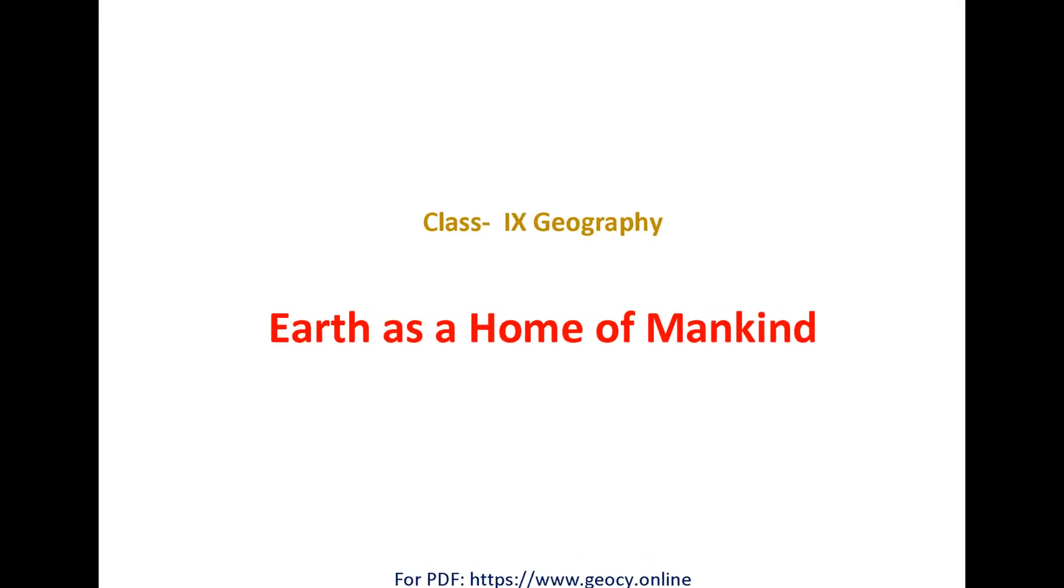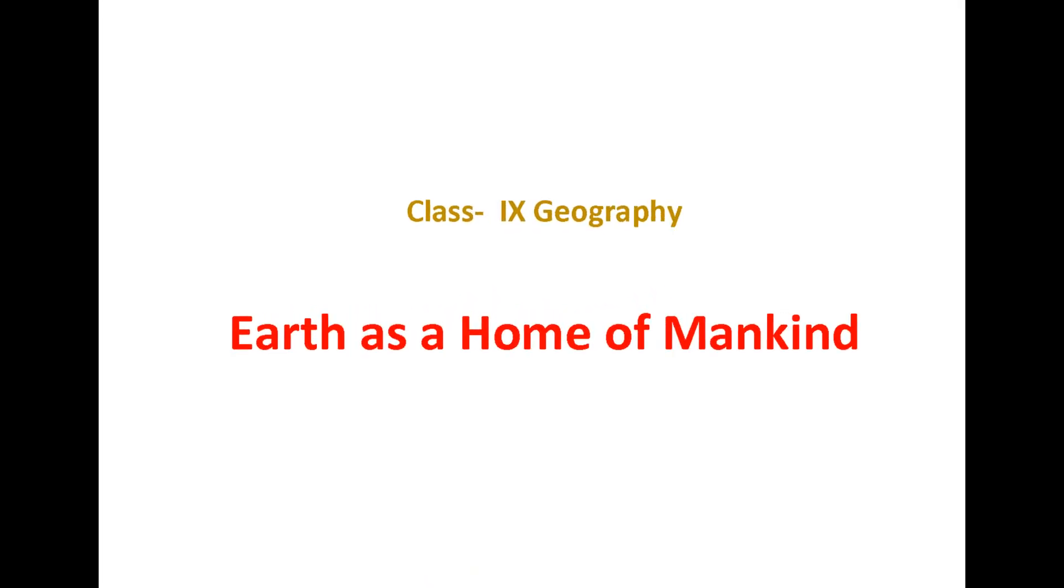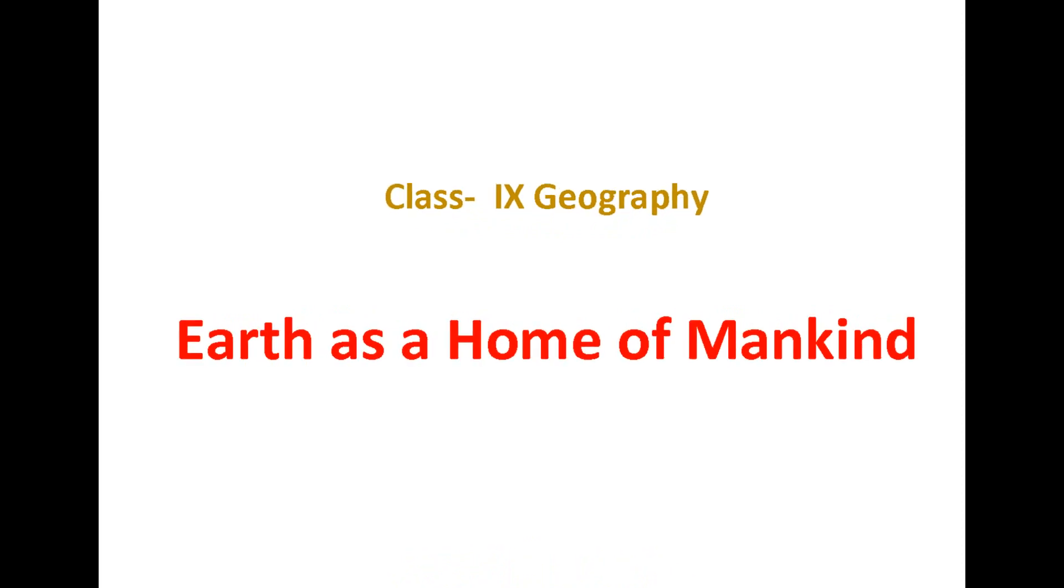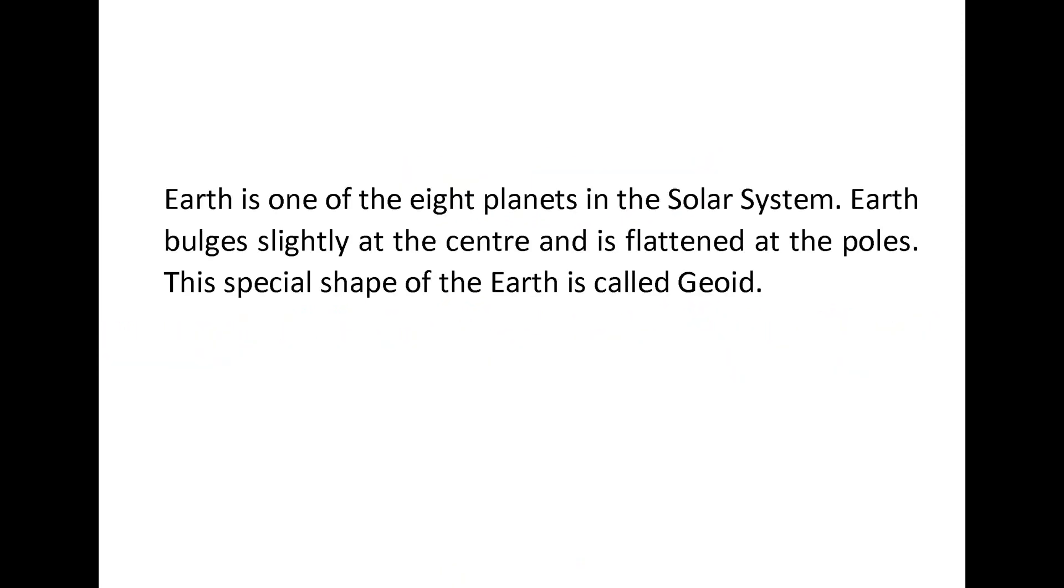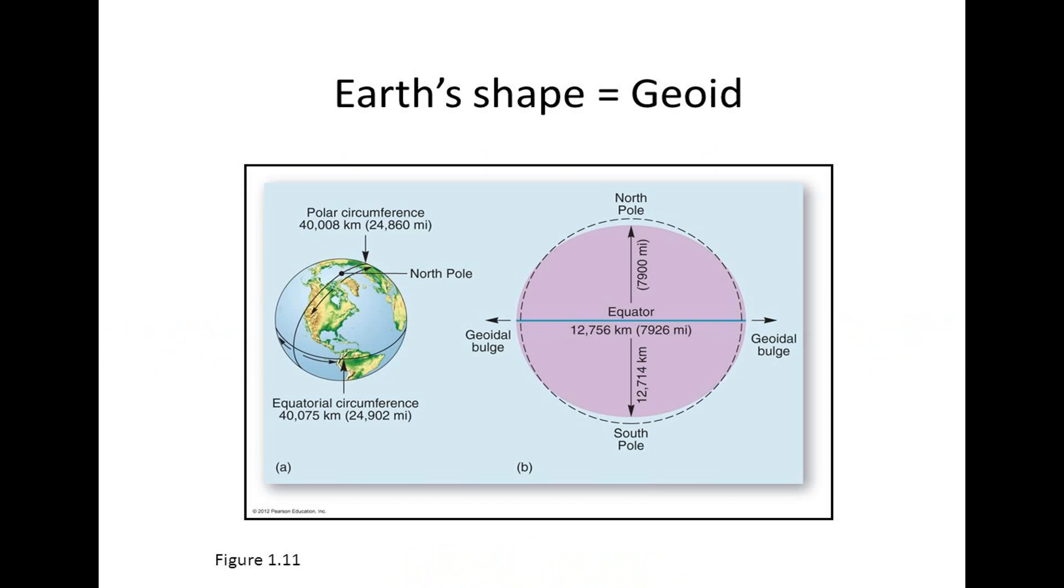Dear students, today we will learn about unique features of the earth that makes life possible on the surface of the earth. Earth is one of the eight planets in the solar system. Earth bulges slightly at the center and is flattened at the poles. This special shape of the earth is called geoid.